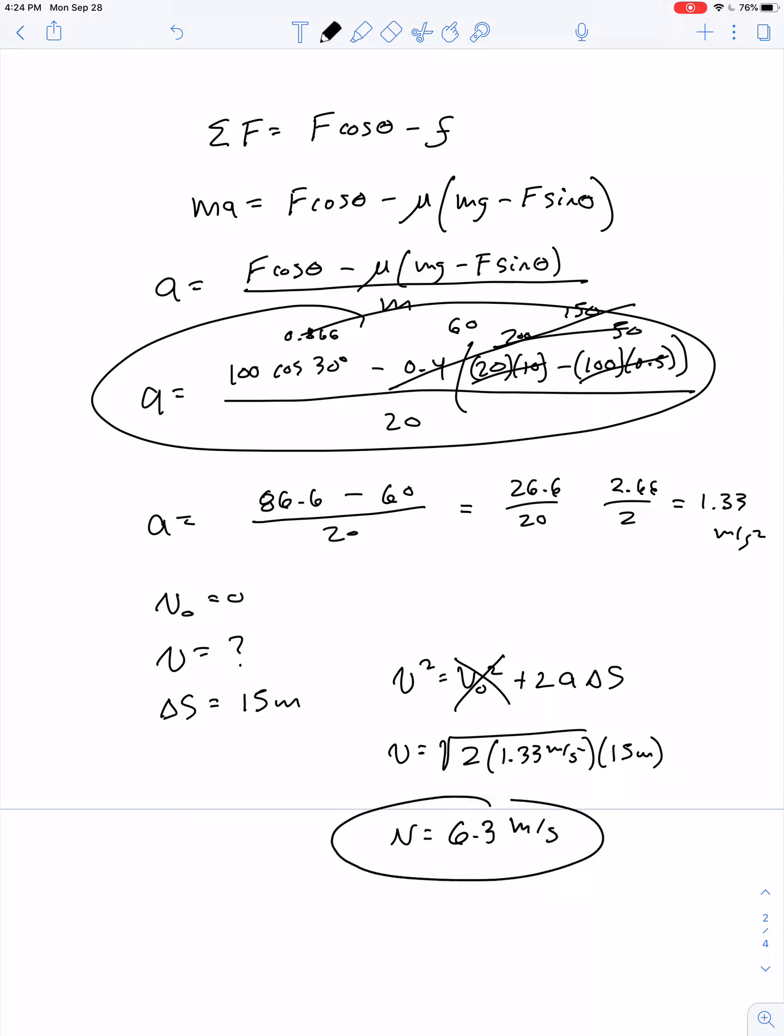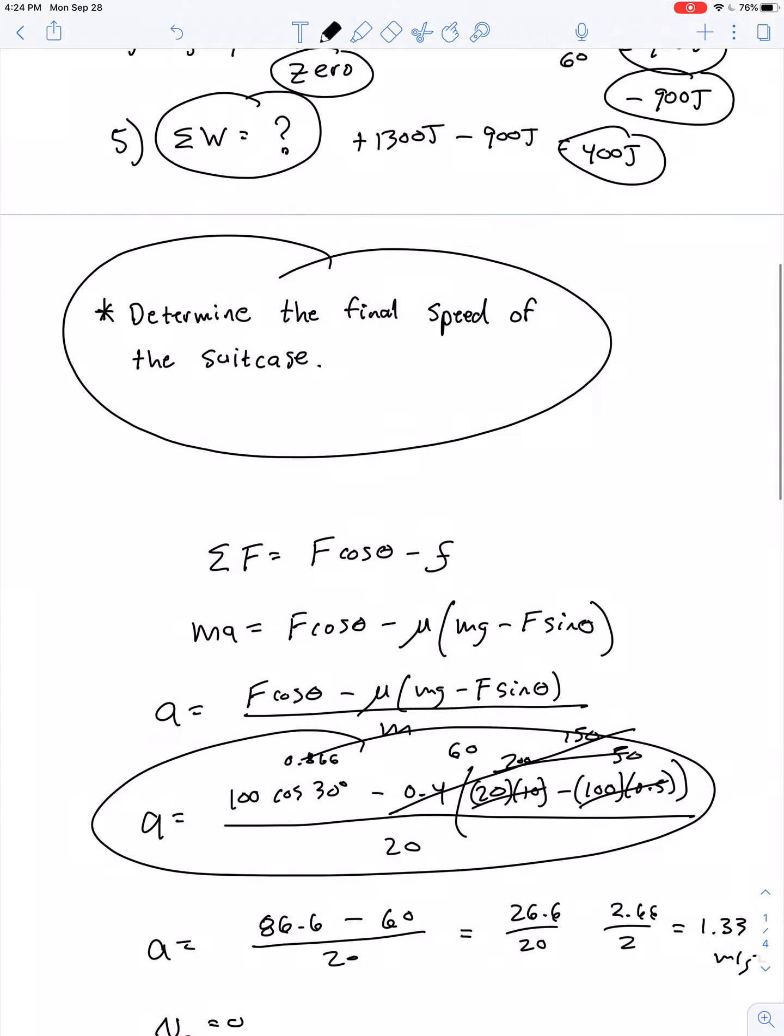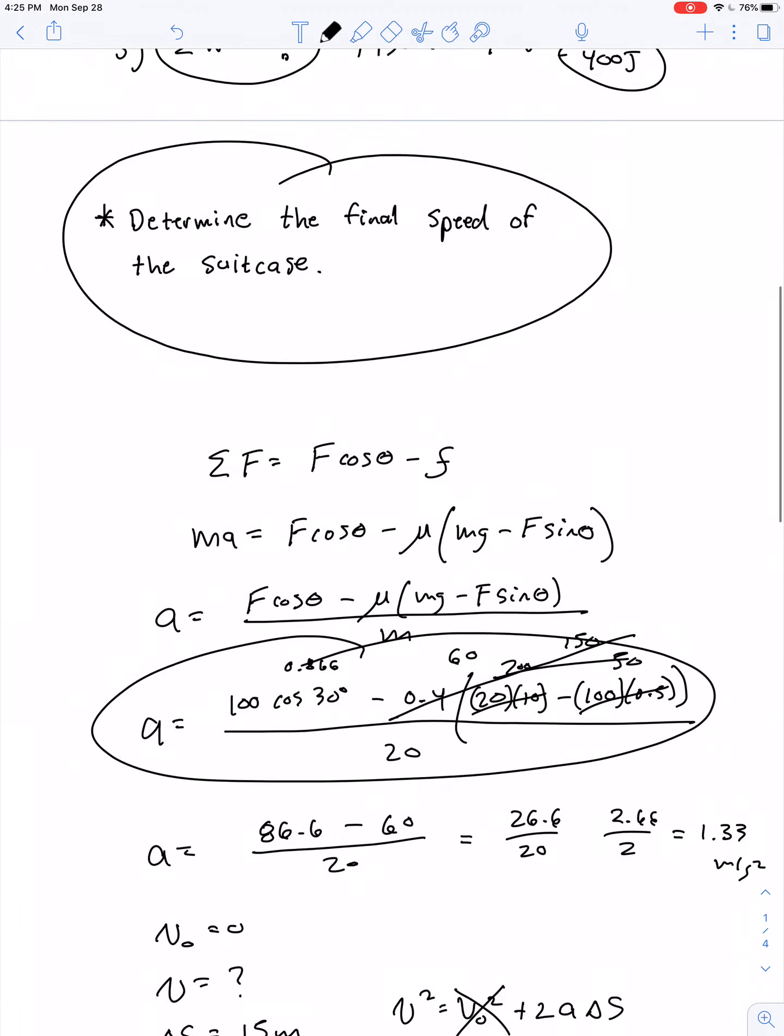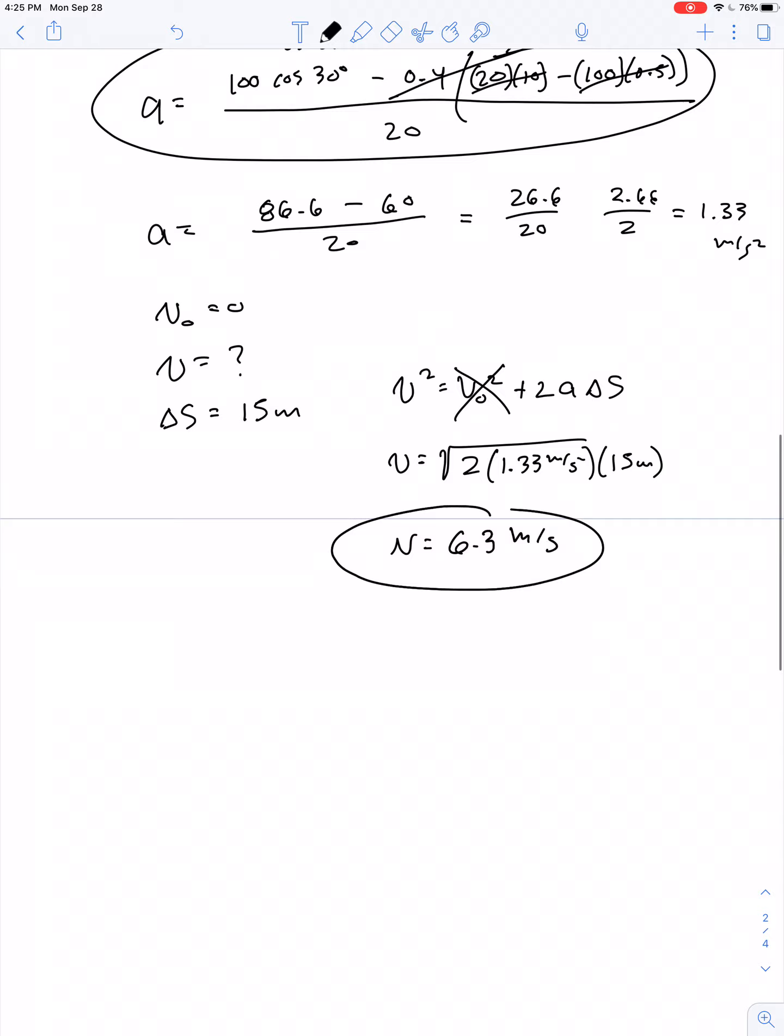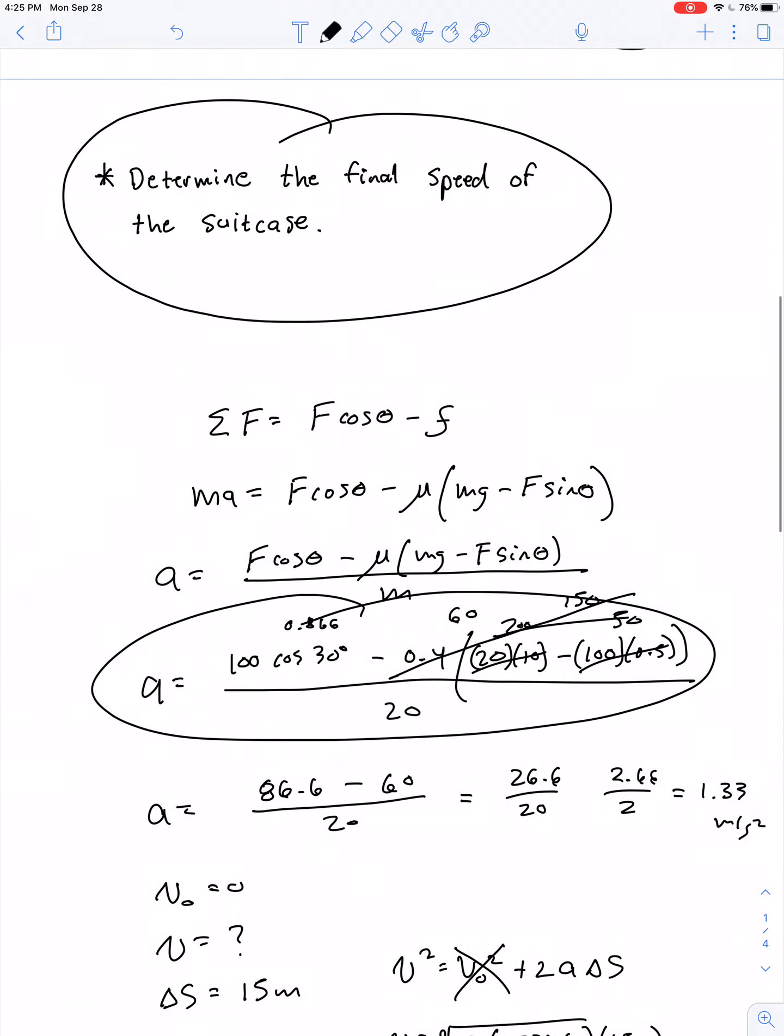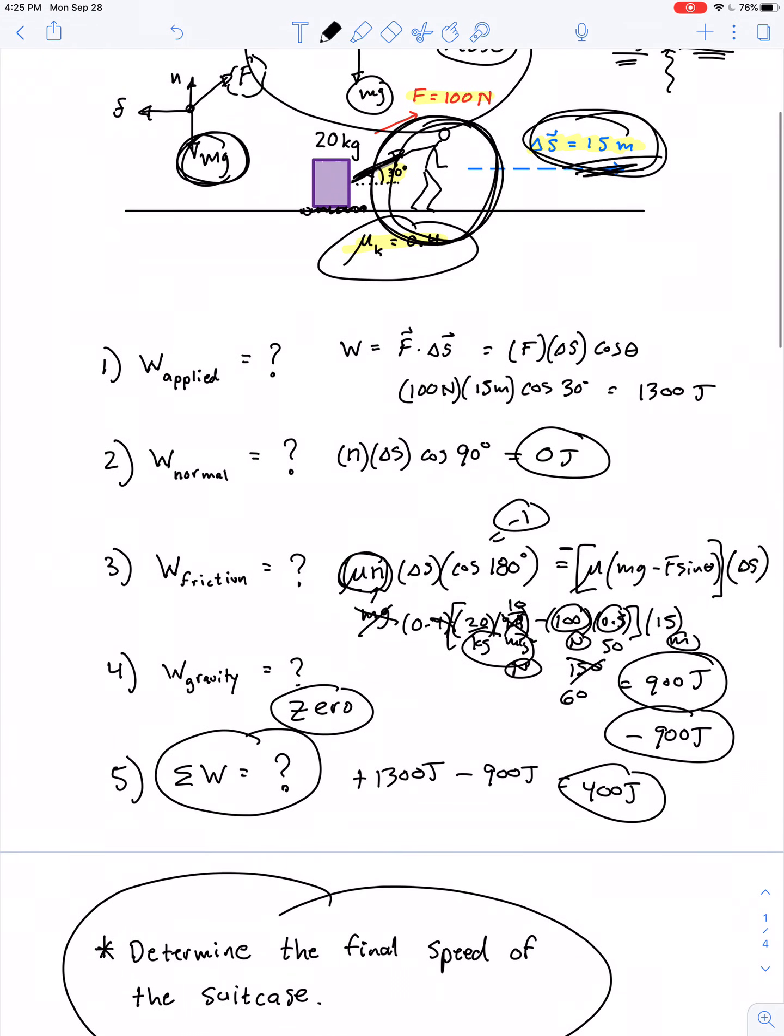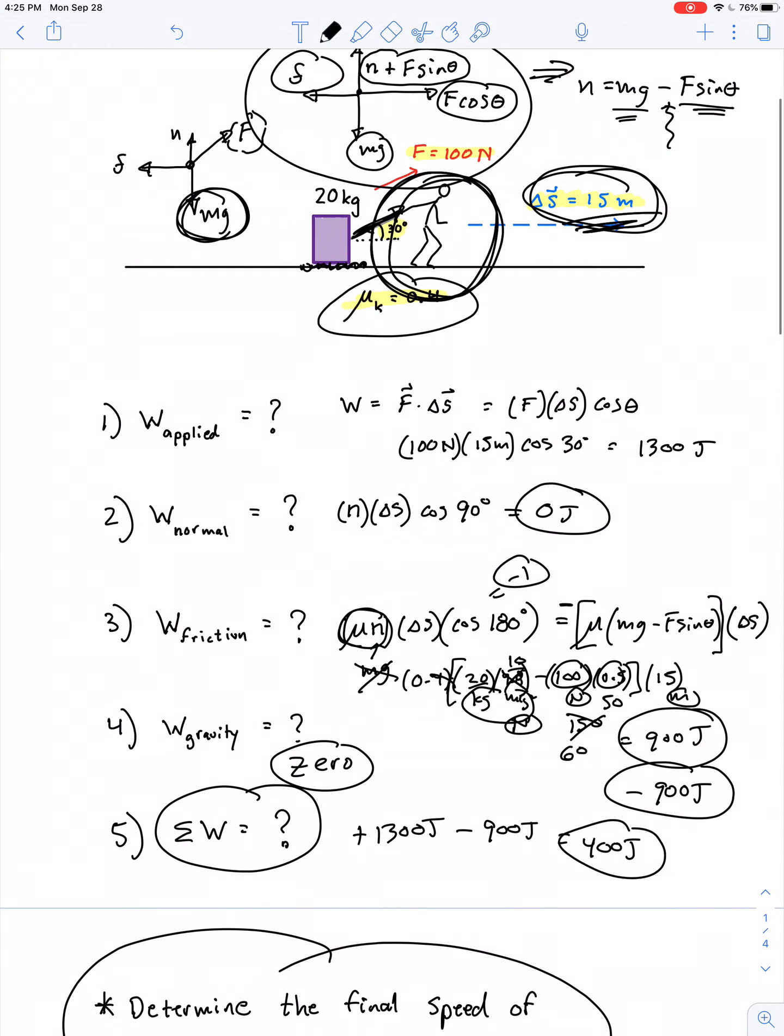So we get a result of 6.3 meters per second. Now that's pretty fast. That's getting close to 15 miles per hour, which means this person is sprinting pretty quickly by the end of that 15-meter pull. So the numbers might not be entirely realistic. Possible, but at the very least, this is another problem that provides good practice in calculating work for various forces.